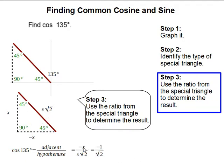Then we simplify. x over x, they cancel out. That leaves us negative 1 over root 2. And in math we can't have a root at the denominator as a result.